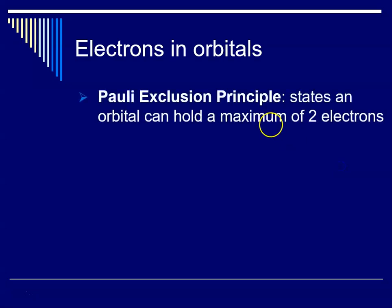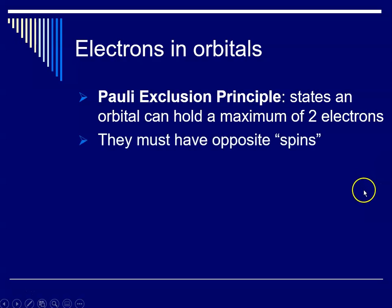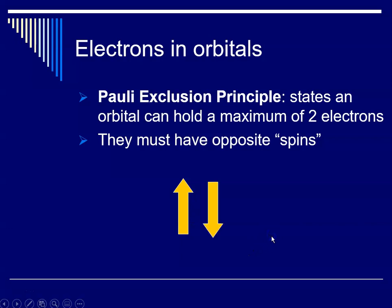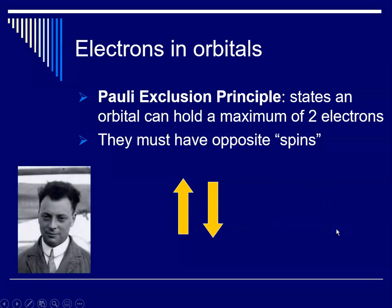The second rule is the Pauli exclusion principle, which states that an orbital can hold a maximum of two electrons and they must have opposite spins. The spin quantum number is plus one-half and minus one-half, but for a two-dimensional representation it's easier to show electron spin as an arrow pointing up or an arrow pointing down, corresponding to plus one-half and minus one-half.